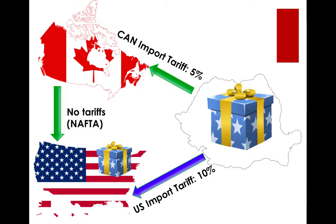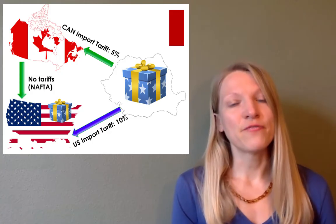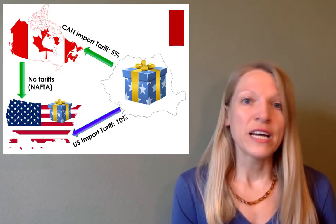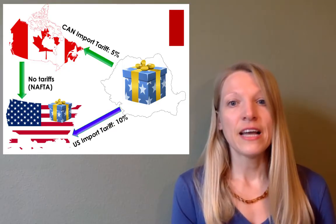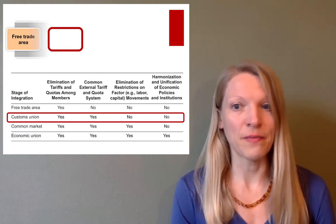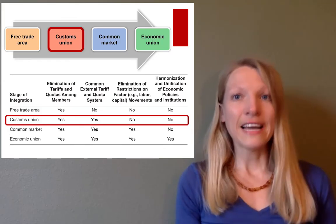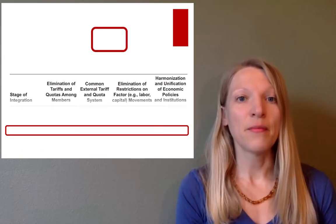So that U.S. consumers can enjoy product A at lower cost, which includes the 5% import tariff rather than the 10% import tariff. In this situation, Canada benefits from import business whereas the U.S. does not. A situation like that may eventually lead to the creation of a customs union, where members of the free trade union agree to adopt common external tariffs for non-member countries.